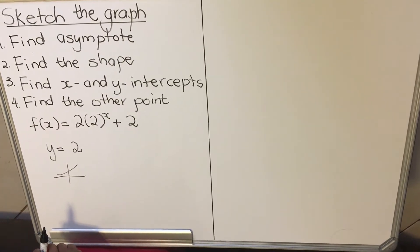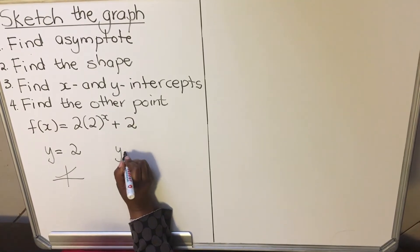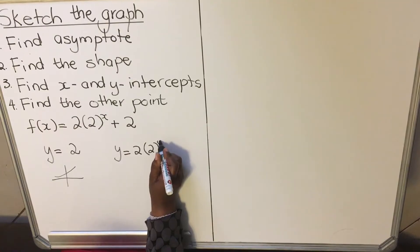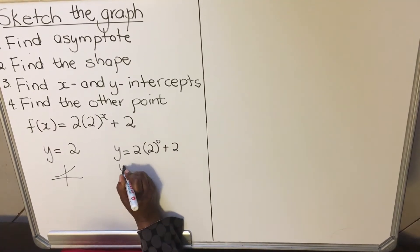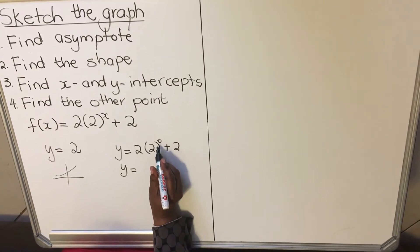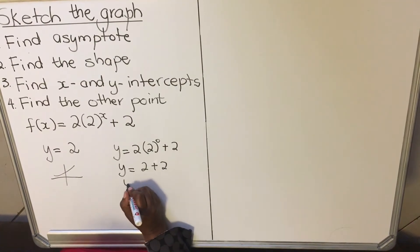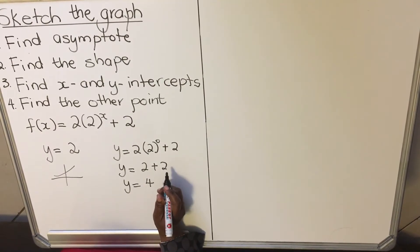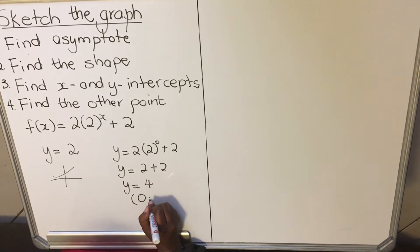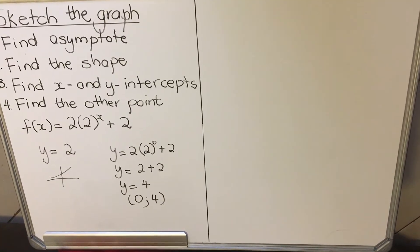To find the y-intercept, we let x = 0. So we have y = 2·2^0 + 2. Any number to the power 0 is 1, so 1 times 2 is 2, plus 2 equals 4. So my y-intercept is 4, and my coordinate is (0, 4).